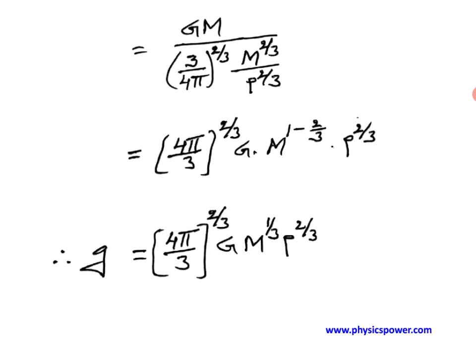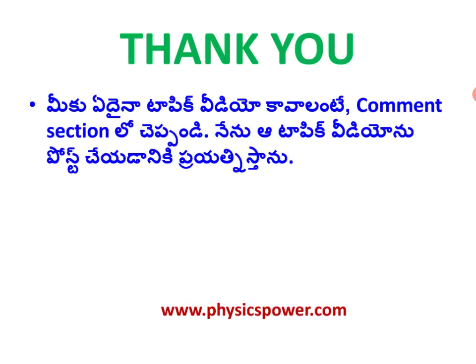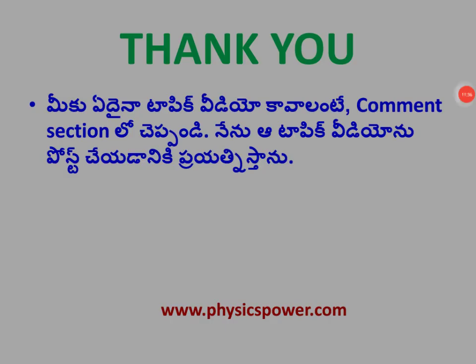So the final expression is: acceleration due to gravity g equals (four-pi by three) to the power two-thirds times G times M to the power one-third times rho to the power two-thirds. If density is constant, then g is proportional to M to the power one-third. This covers the mass, radius, and density relations for acceleration due to gravity. Thank you all — if you want a particular topic video, please mention it in the comment section.